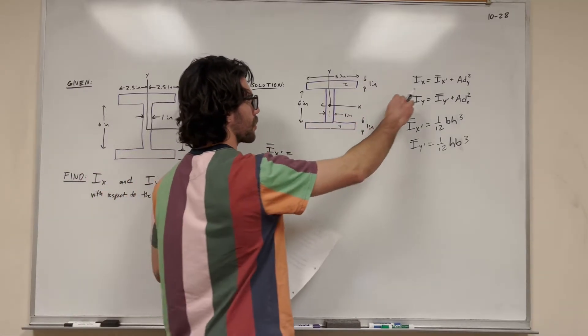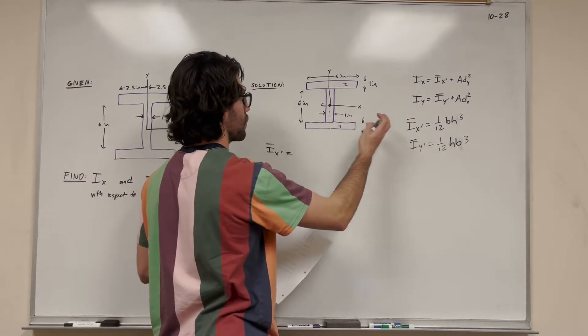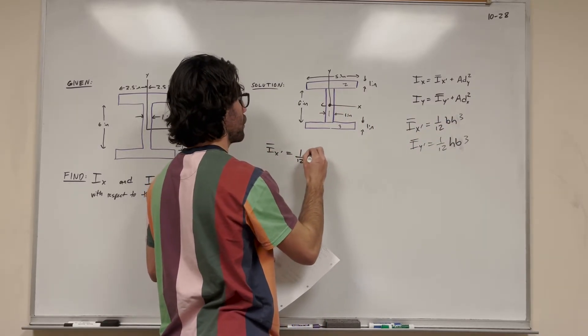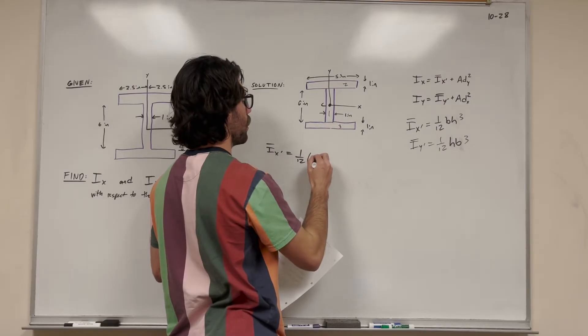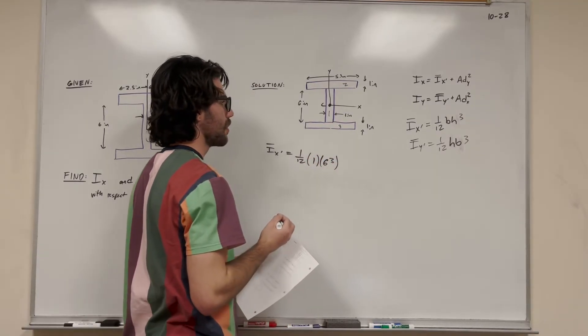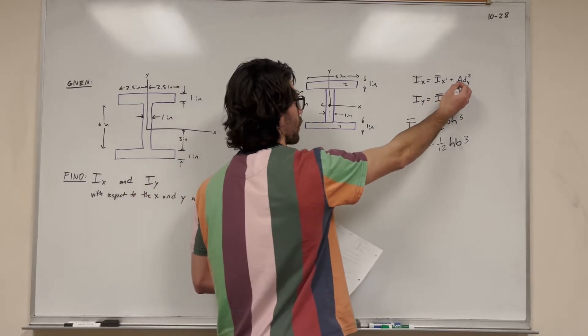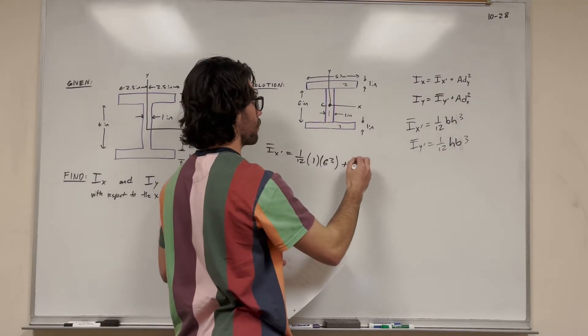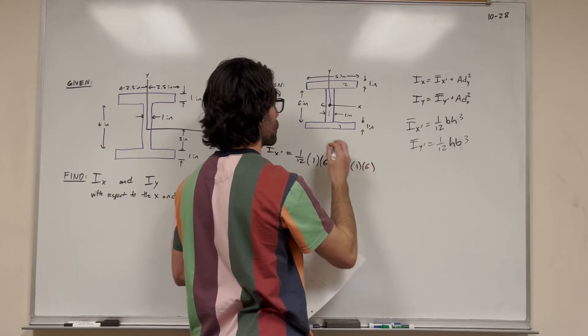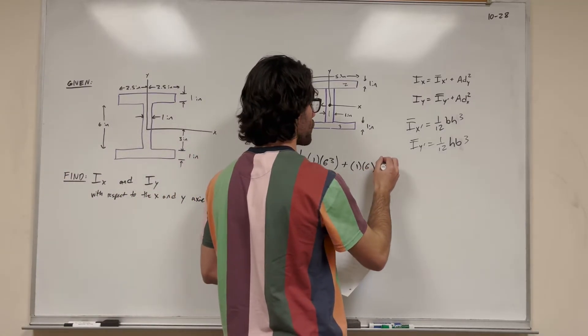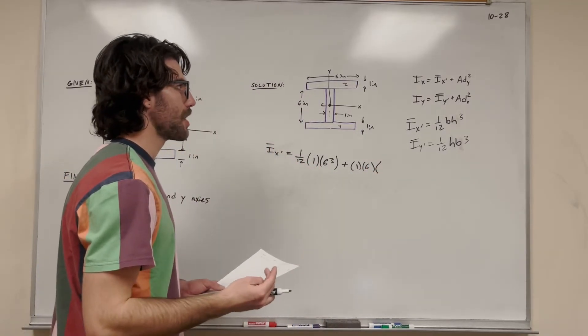Let's start with our first shape. We're going to add 1/12 base height cubed - so 1/12 times 1 times 6 cubed. Then we add the area distance y squared. The area of this shape is 1 inch times 6 inches. Then we multiply by distance y squared. So what is distance y?